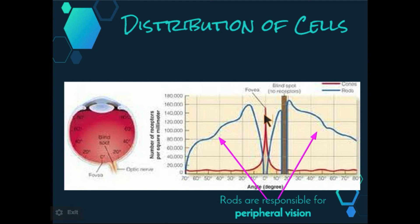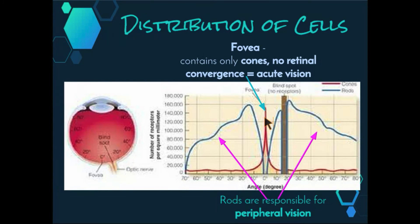The cones in the fovea are very densely packed and show no retinal convergence. As a result, they have a high degree of visual acuity, perceiving images central to the field of view, clearly and precisely.